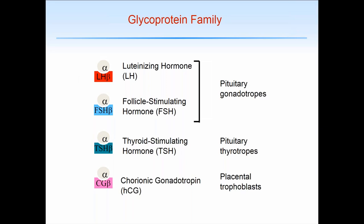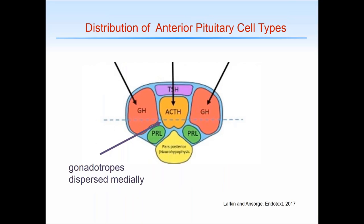This is a very idealized schematic of the location of the various pituitary hormones. Here we see the neurohypophysis in yellow, and the anterior pituitary gland — about 40% of anterior pituitary cell types are growth hormone-secreting cells, shown as large circular areas. ACTH cells tend to be in the middle, TSH cells anteriorly, and prolactin cells in the back. Gonadotrope cells are not shown congregated but tend to be dispersed throughout the medial portion of the gland, which can have some clinical implications if there's a mass or infarct in this area.